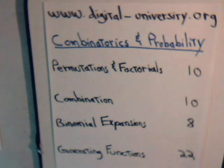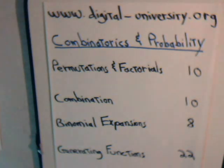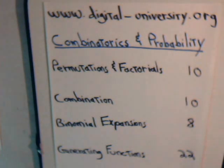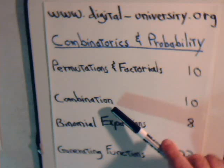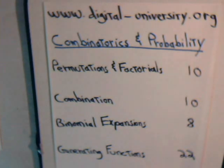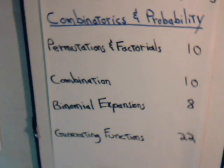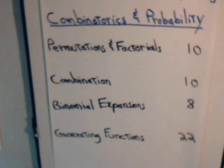This is our third video on solving probability problems from digital-university.org. If you go to the website and go to the combinatorics and probability section, you'll find a whole series of videos where we solve different types of permutation and combination problems, and we develop some of the mathematical background and techniques for generating functions, which we then use to solve more complicated combination and permutation problems.